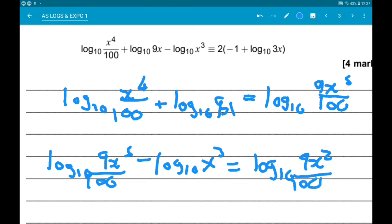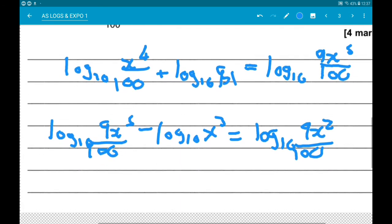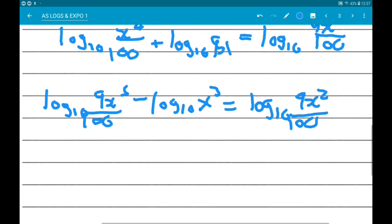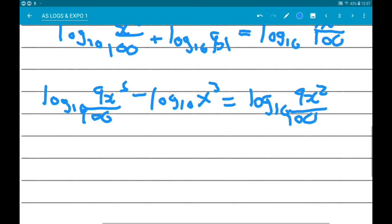So what's happened there? We've done x to the 4 times 9x divided by 100 times x cubed, which gives x to the 5 divided by x cubed. Now, everything inside is squared. So we can write this as log of 3x over 10 all squared.